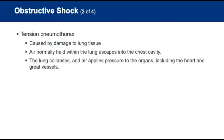Tension pneumothorax is caused by air that has damaged lung tissue and escaped into the chest cavity, collapsing the lung. If left untreated, air accumulates in the chest cavity and applies pressure to organs including the heart and vessels. When sufficient pressure is applied to the heart, it cannot beat — similar to cardiac tamponade — resulting in obstructive shock.